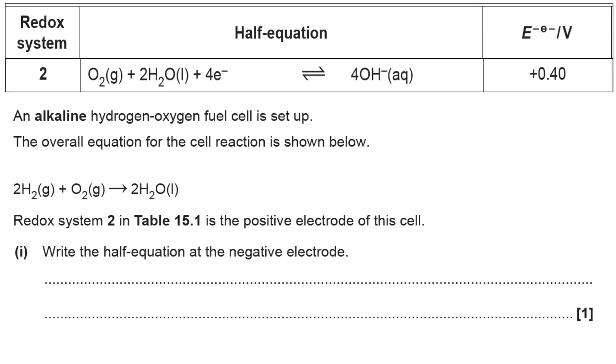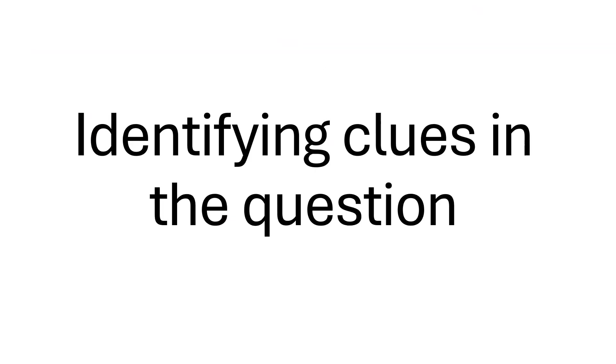A cropped section of the redox system table that you'd normally get. This question is obviously part of a larger question, but the section that I'm interested in is where they ask you to work out the unknown half equation. So there are some clues in here if you read it carefully. So I'll take you through how to make it work for you.